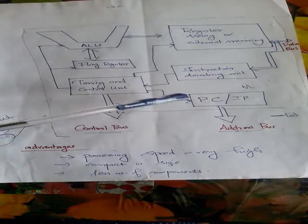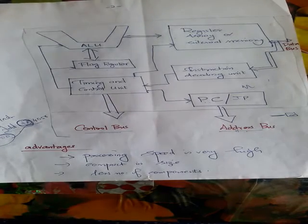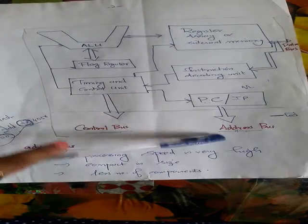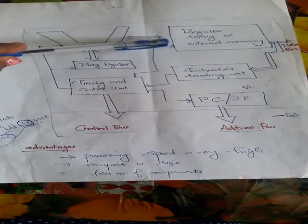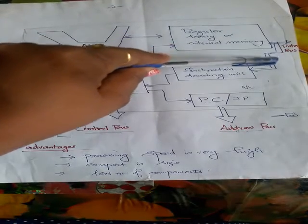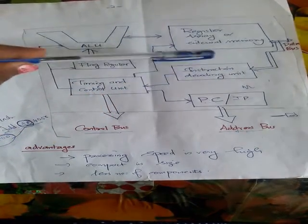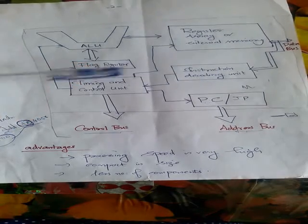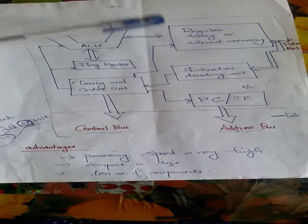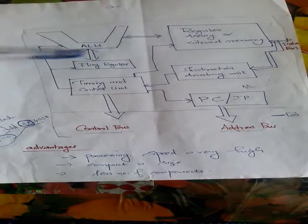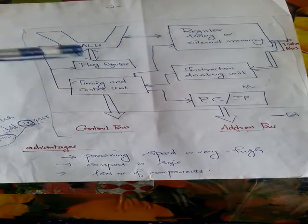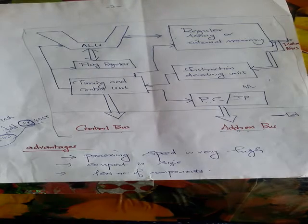The program counter will generate the address of the instructions which need to be fetched from the memory and send them through the address bus to the memory. The memory will send all the instruction codes through the data bus to the instruction decoding unit. The instruction decoding unit will send all the information to the timing and control unit. The data will be stored in the register array for processing by the ALU, and the output of the ALU will be stored there as well. The control unit will generate the necessary control signals for internal as well as external operations of the microprocessor.